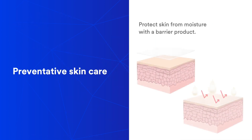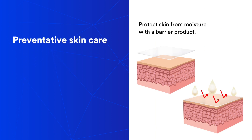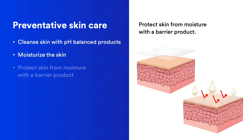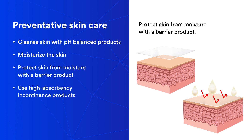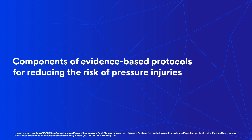According to the National Pressure Injury Advisory Panel, a preventative skin care regimen is critical for pressure injury prevention. Regimens should include cleansing of the skin with a pH-balanced product, moisturizing, use of a barrier film or skin protectant, and use of high-absorbency incontinence products.